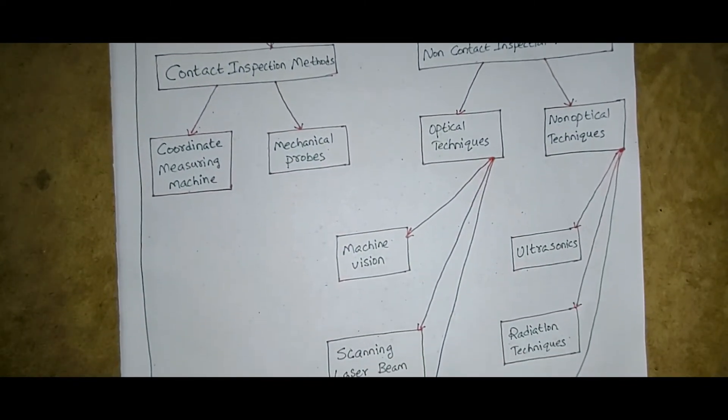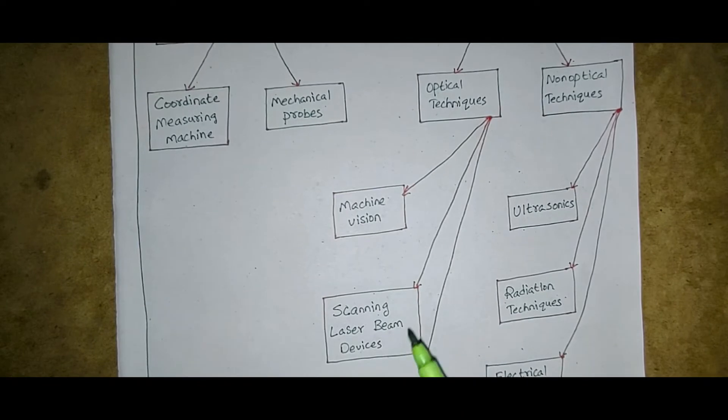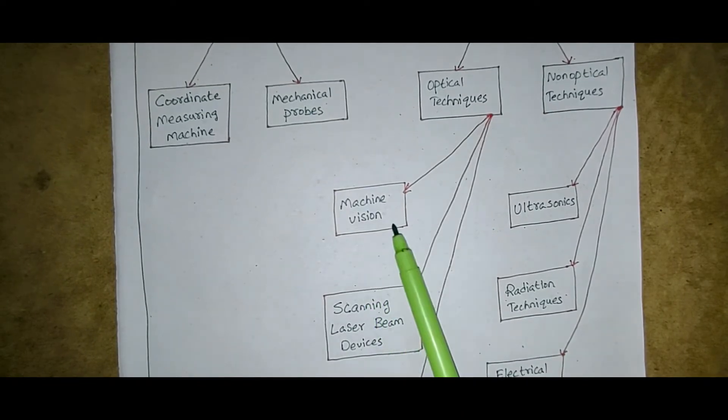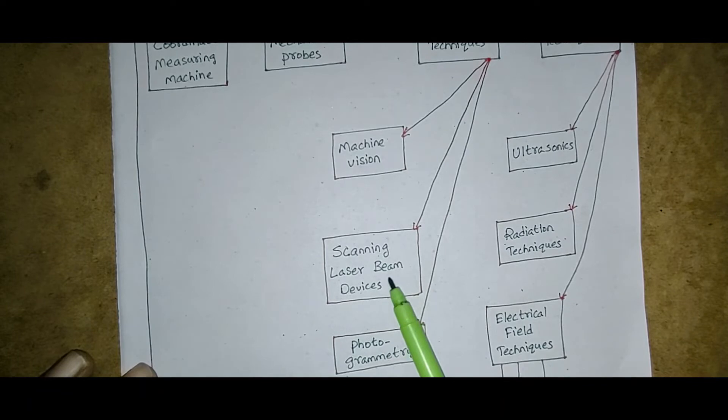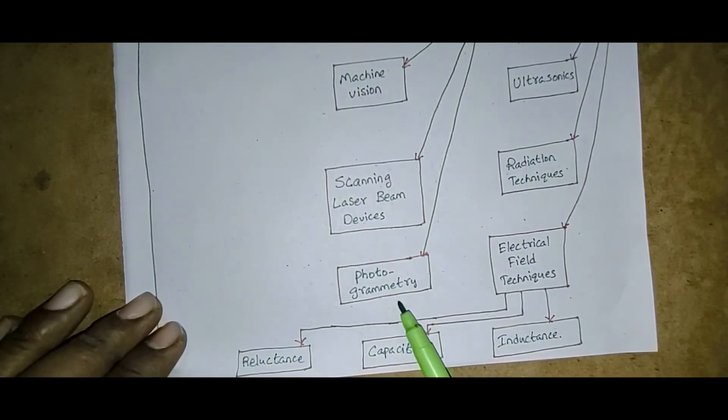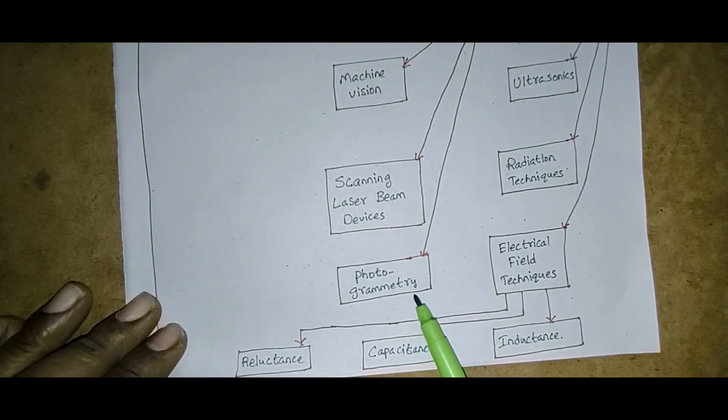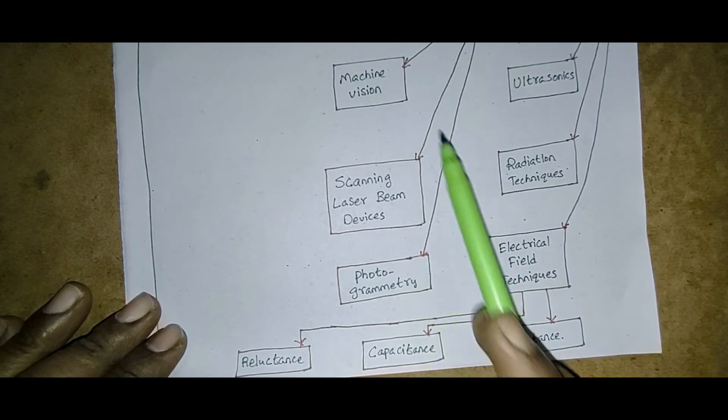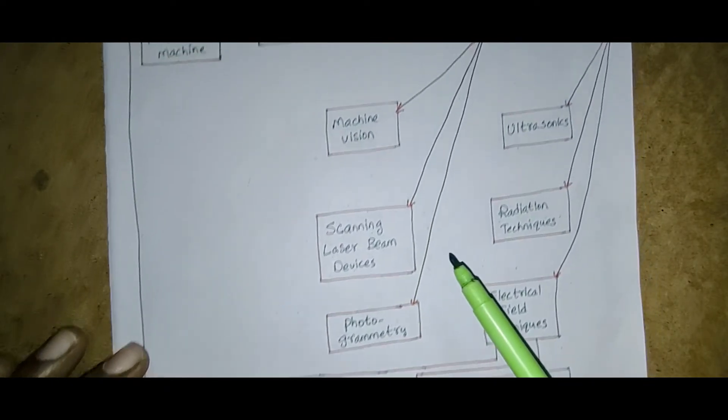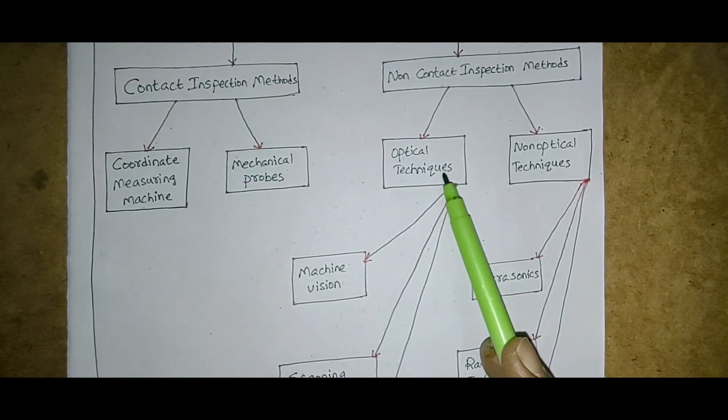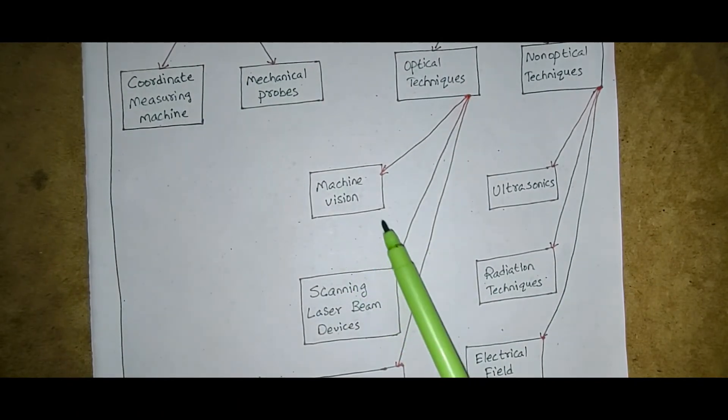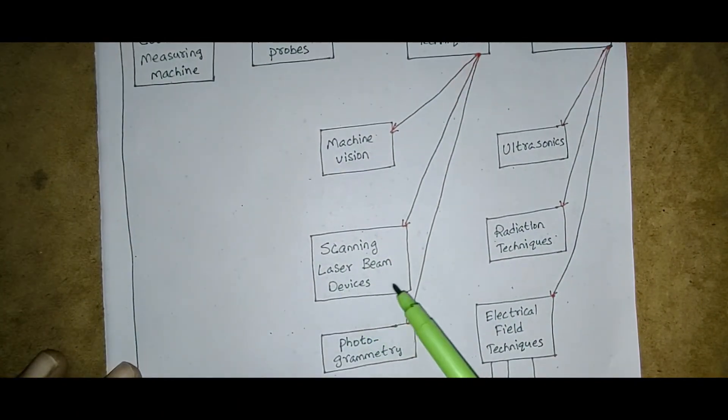Under this optical techniques comes various parameters. See here in this diagram, machine vision is there, scanning laser beam devices, and photogrammetry. These three parameters come under the optical techniques.